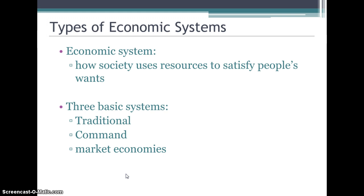An economic system is just how a society uses its resources — land, labor, capital — to satisfy people's wants. Right now there are basically three basic economic systems in the world: traditional, command, and market economies. There's a fourth system called a mixed market economy that combines parts of a market economy and a command economy, but we'll primarily talk about traditional, command, and market right now.